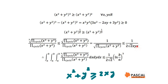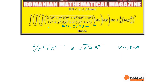Since the integral of dx/x from a to b is ln(b) − ln(a), the given integral is smaller or equal to (1/(2√2)) · (ln(b) − ln(a))³, which is smaller or equal to (1/4) · ln(b/a)³.